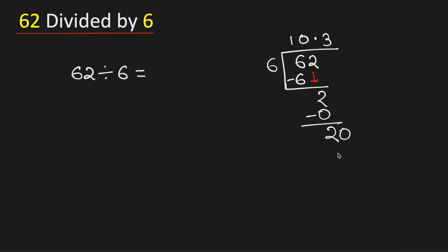Now 6 times 3 is 18. Subtract, we get 2. Again, 2 is less than 6, so we borrow one 0.